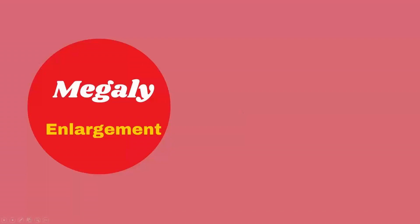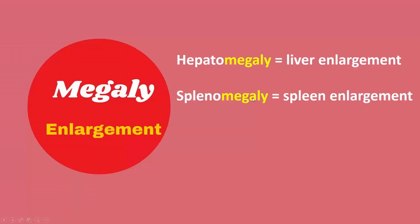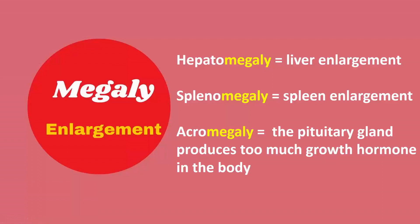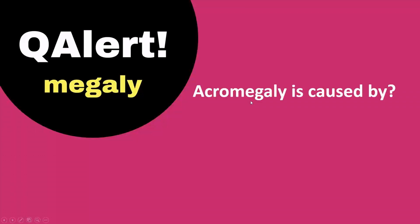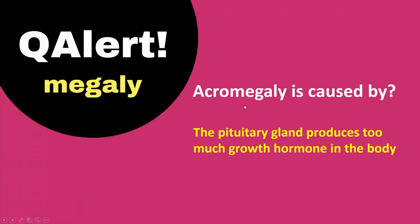Finally, suffix megaly refers to enlargement. Examples: hepatomegaly is liver enlargement, splenomegaly is spleen enlargement, acromegaly is caused by the pituitary gland producing excessive growth hormone. Question alert: acromegaly is caused by excessive growth hormone production by the pituitary gland.